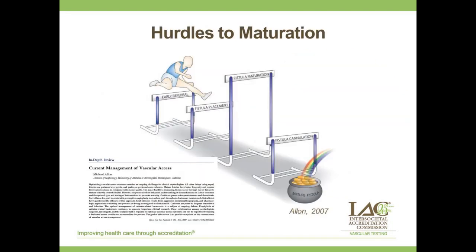This leads us to the hurdles to maturation, a well-illustrated point from a paper by Dr. Michael Allen. The first hurdle is early referral — the nephrologist needs to refer the patient early to a surgeon for fistula placement. Then there is preoperative mapping. But the biggest hurdle is fistula maturation — the hardest to overcome, requiring cooperation and a team approach from both the sonographer and the surgeon. If we successfully clear that hurdle, the next is fistula cannulation, with the pot of gold at the end being a mature fistula.